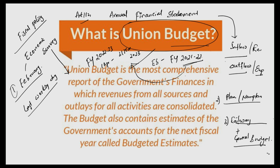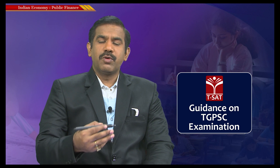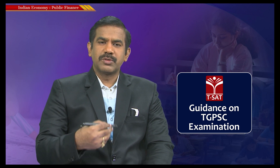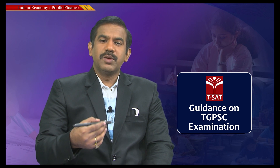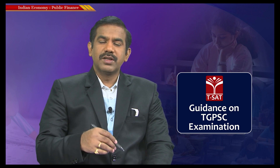The Union Budget is a comprehensive report of government finances, detailing revenues from all sources and outlets for all activities — how much tax income, how much through disinvestment proceeds, how much through borrowings, and how funds are dispersed between revenue and capital expenditure. This financial statement submitted for a span of one year to Parliament is what we call the Union Budget or Annual Financial Statement.